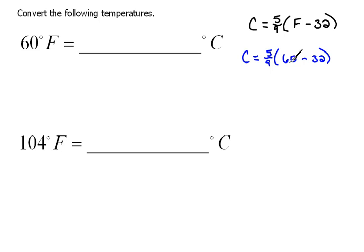Okay, we need to work this as an order of operations problem, basically. We need to do what is inside the parentheses first, so that would be Celsius would equal 5 ninths times 60 minus 32 would be 28.